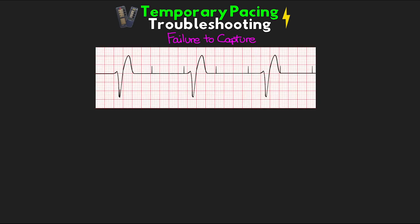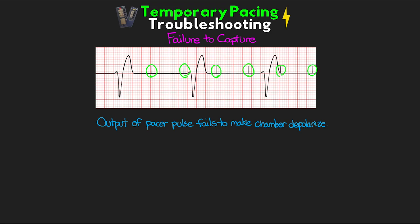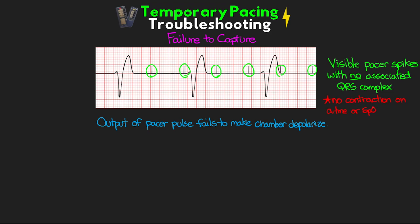The first big problem we'll discuss is failure to capture. This means the output of our pacemaker pulse is failing to make the target chamber depolarize. The pacemaker fires pacing spikes, but some or all are not captured by the myocardium. On the example here, we see all of these pacer spikes firing but none directly leading to depolarization. The telltale sign is visible pacing spikes with no associated QRS — signifying electrical capture leading to contraction has not taken place. You'll also see no contraction on your A-line or SpO2 waveform.